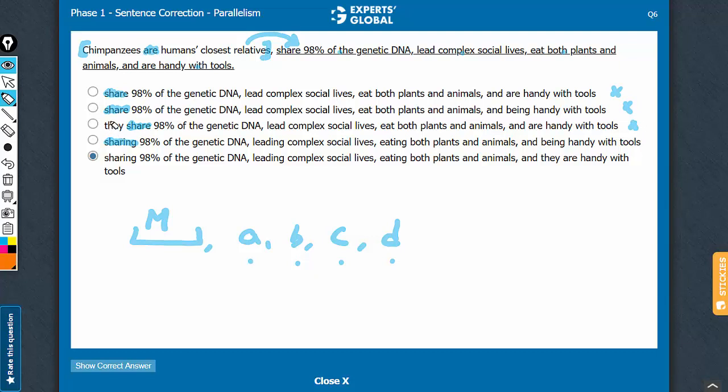Answer choice C has one more problem. It brings in a pronoun when it is just not needed. Chimpanzees are the subject of the sentence. Whatever is being said is being said about the chimpanzees. This extra pronoun is just not needed. So, another reason why C is incorrect.